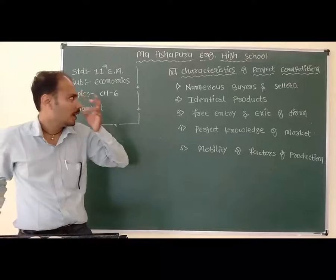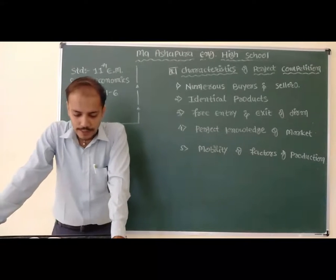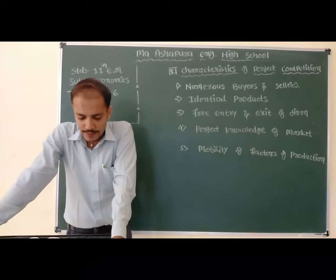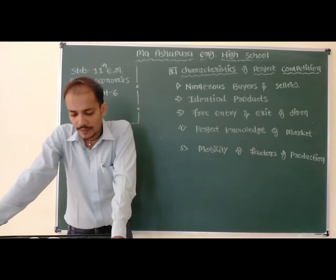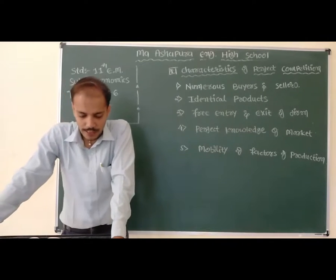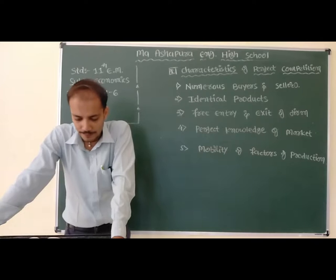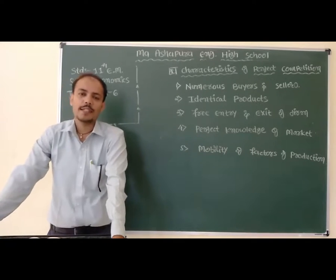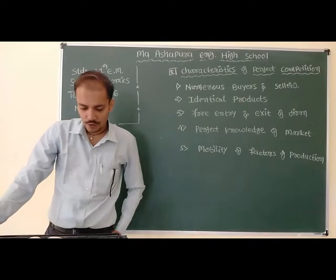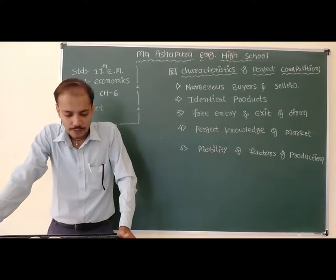The first characteristic is the large number of buyers and sellers. This market has a large number of buyers and sellers. A single seller is a very small part of the market and can supply only a small amount, due to which they cannot control or monopolize the wholesale market, neither can they influence the market price.